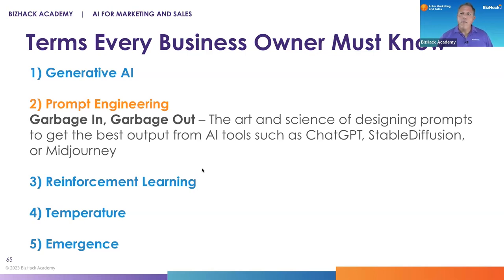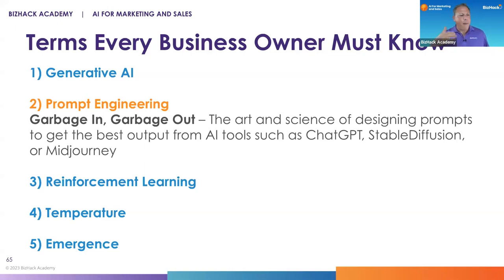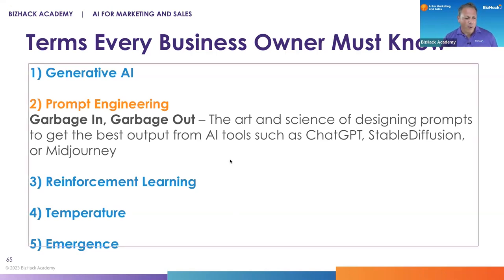I work with a VA firm based overseas, and I often have to write them really detailed emails with instructions on what to do. I learned that technique from Tim Ferriss and the 4-Hour Workweek — one of the chapters is about how to write prompts for a VA. When I got to ChatGPT, it felt super familiar. I realized I've been doing prompt engineering with my virtual assistant for years. So if you're really good at writing standard operating procedures or clear instructions for your team, you'll find prompt engineering is a very natural skill.